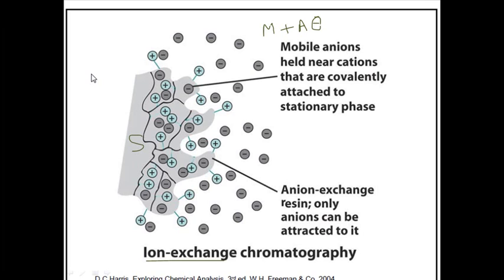The anions are attracted towards the cations, and the mobile phase runs off really fast. The analytes, being anions, have a tendency to attach to the cationic portions, so they elute last, while the mobile phase elutes quickly. This results in the separation of anionic molecules. Other molecules that are cations cannot be attracted by the stationary phase, so they elute much faster.